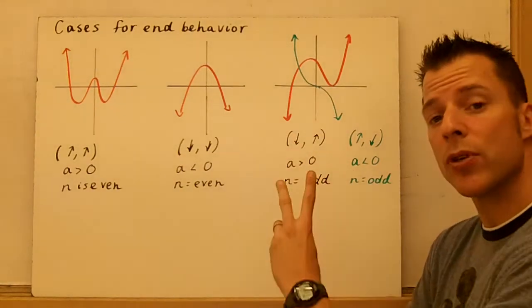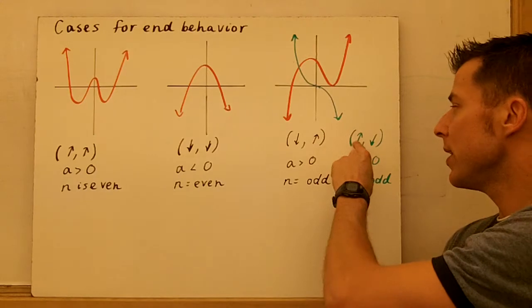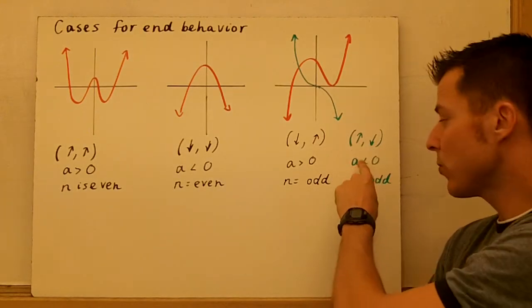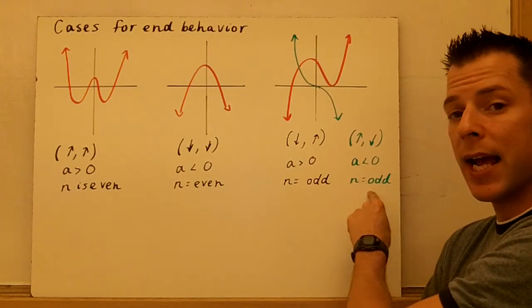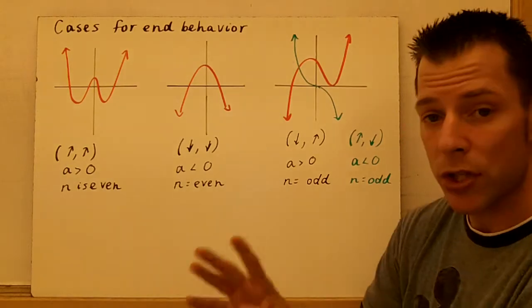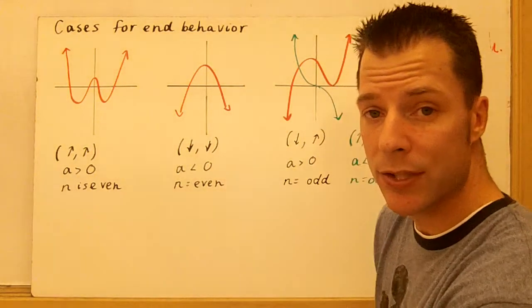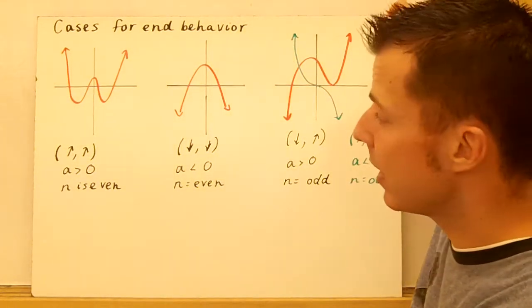I ran out of room, so I put two graphs on one here. The green function is up-down. That's when a is less than zero, and n is odd. So those are the four cases, and let's look at an example of how to determine end behavior.